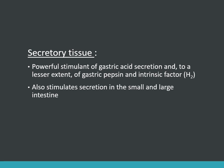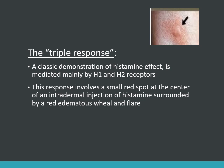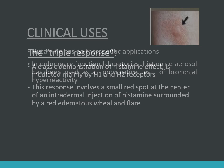The triple response is a classic demonstration of the histamine effect, mediated mainly by H1 and H2 receptors. It involves a small red spot at the center of an intradermal injection of histamine, surrounded by a red edematous wheal and a flare. This process involves three separate cell types: smooth muscles in the microcirculation, capillary endothelium, and sensory nerve endings. The wheal is due to vasodilation and edema from endothelial contraction, and the flare is an axon reflex.